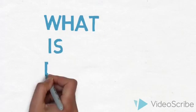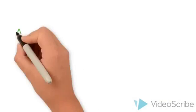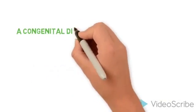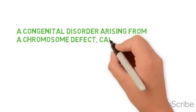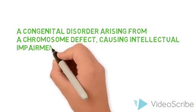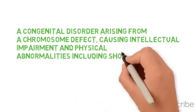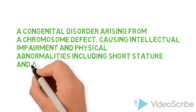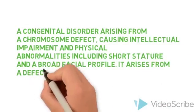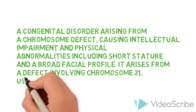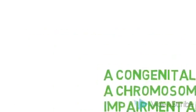So, what exactly is Down's Syndrome? According to the Oxford Dictionary definition, it is a disorder which happens before birth, resulting in a slower brain development rate and some physical differences, including shorter height and a wider face. It arises from a defect involving chromosome 21, usually an extra copy.